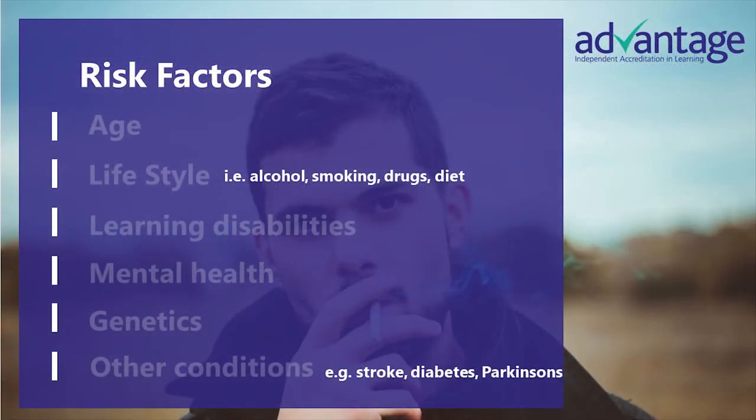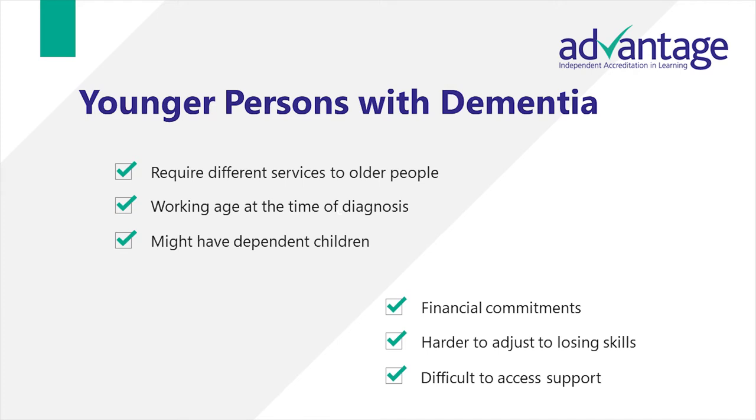So what are the risk factors for dementia? There are multiple risk factors including your age, lifestyle — including things such as smoking, drugs, diet and alcohol — learning disabilities, your mental health, genetics, and other conditions such as stroke, diabetes and Parkinson's disease. Dementia is not entirely a disease of age; it's been estimated that there are over 40,000 young people with dementia in the UK.